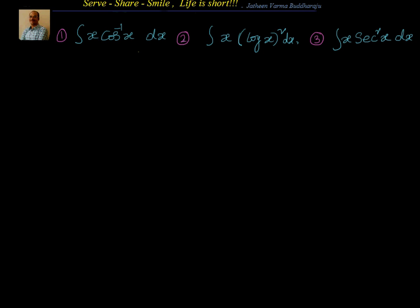Hello friends, welcome back. We are continuing with examples on integration by parts. We will try to solve three examples in this particular session. The first one to be solved is the integral of x·cos⁻¹x dx. In the last session we solved the integral of x·sin⁻¹x. In this session we will try to solve this type of problem using another method — trigonometric substitution.